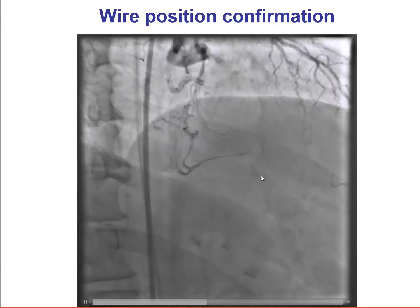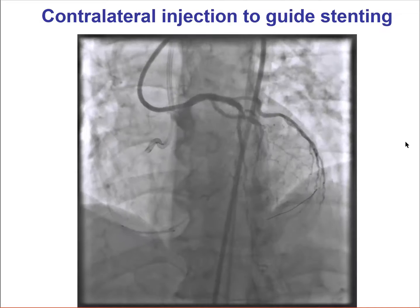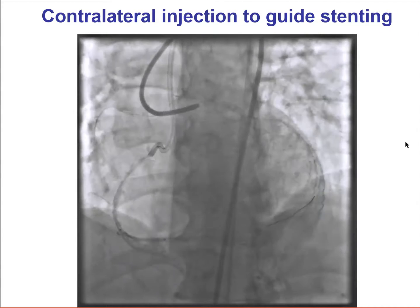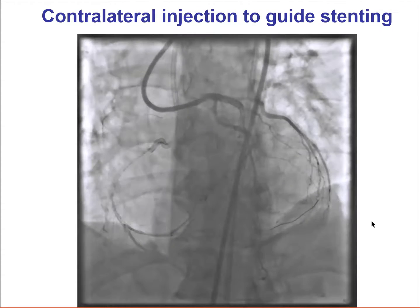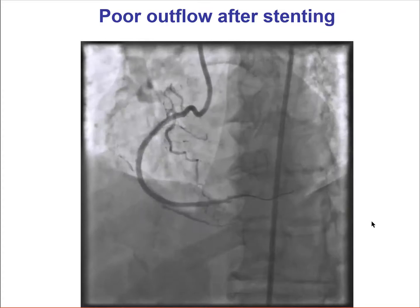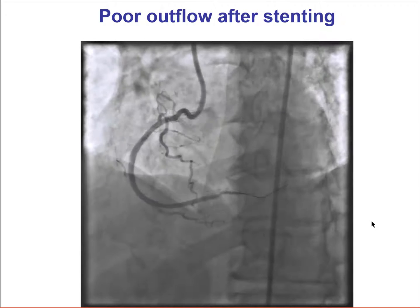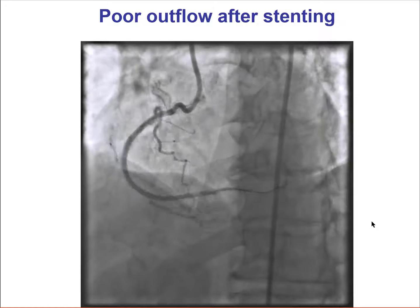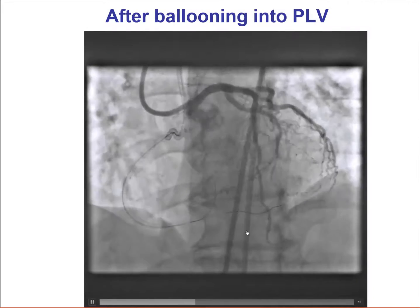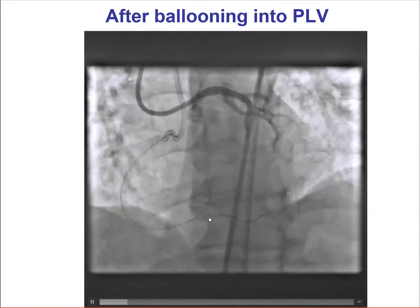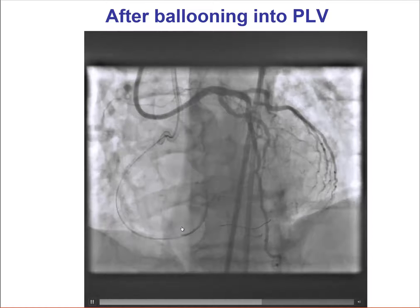An orthogonal projection confirms that the wire has entered the distal true lumen. We then placed stents using contralateral injection to guide the initial deployment location. After stenting the entire right coronary artery, we were surprised to see very limited distal outflow with occlusion of the right posterolateral vessel as well as the right PDA. We then tried to rewire into the PL and the PDA, and performed a small inflation with a 1.5 millimeter balloon.